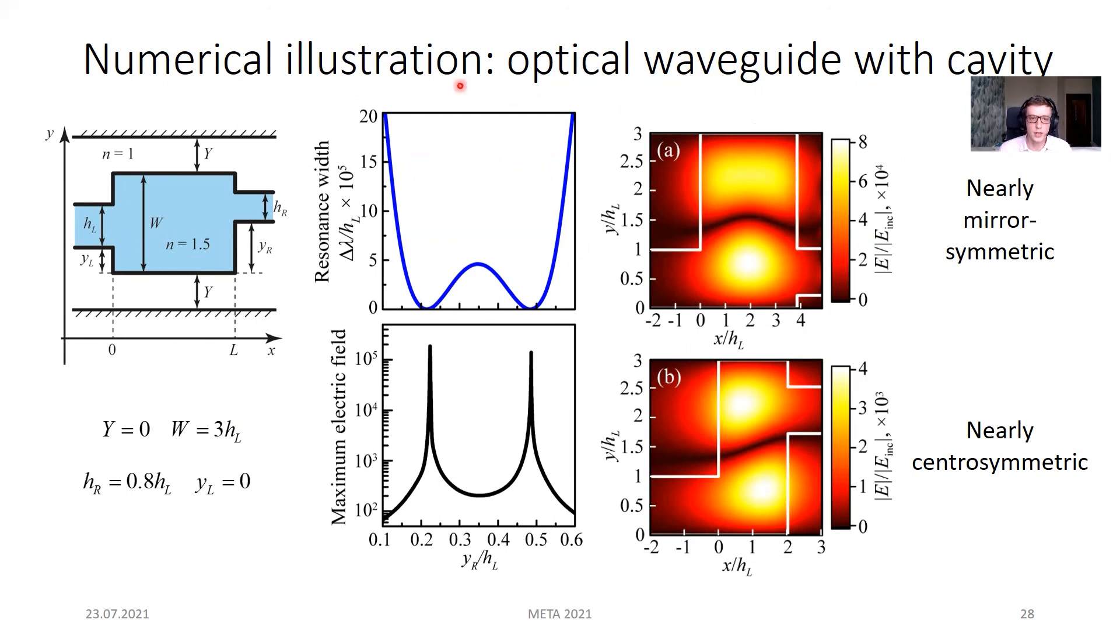Here is the plot of Fano resonance width for a nearly mirror-symmetric configuration. One can see two zero minima, which correspond to two BICs. Alternatively, the maximum electric field normalized to the incident electric field diverges at these points. One can see that there is a wide range of parameters between these two BICs where resonance width remains small, which provides a relatively high Q-factor.